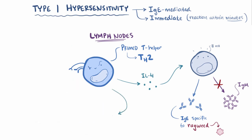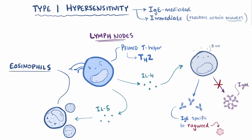TH2 cells also release some interleukin 5, which stimulates production and activation of eosinophils, a granulocyte, which is a type of white blood cell that degranulates, or essentially releases a whole bunch of toxic substances that can damage both invading cells and nearby host cells.